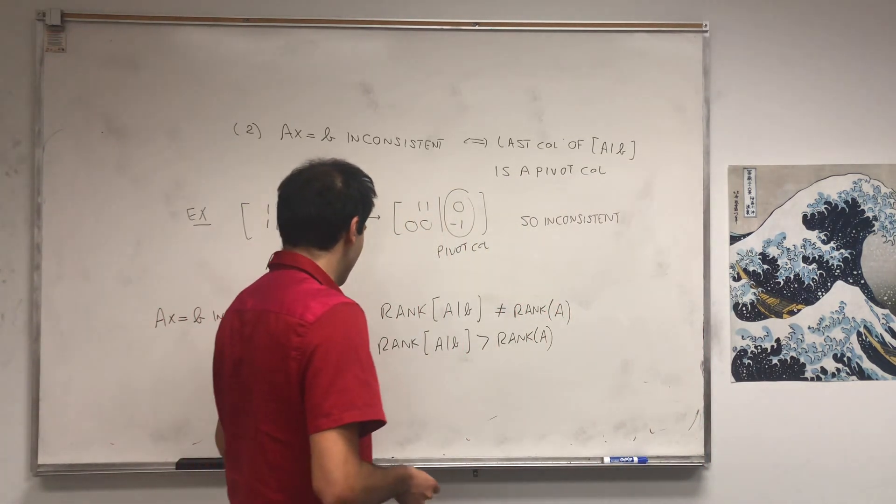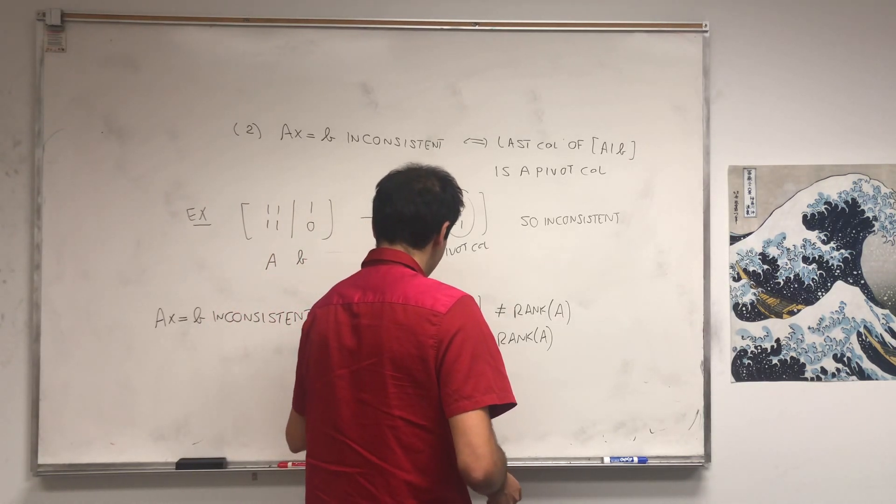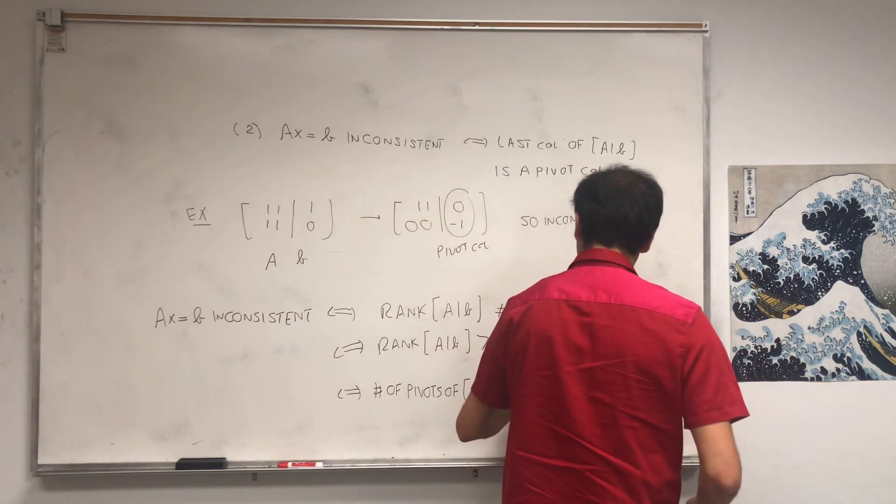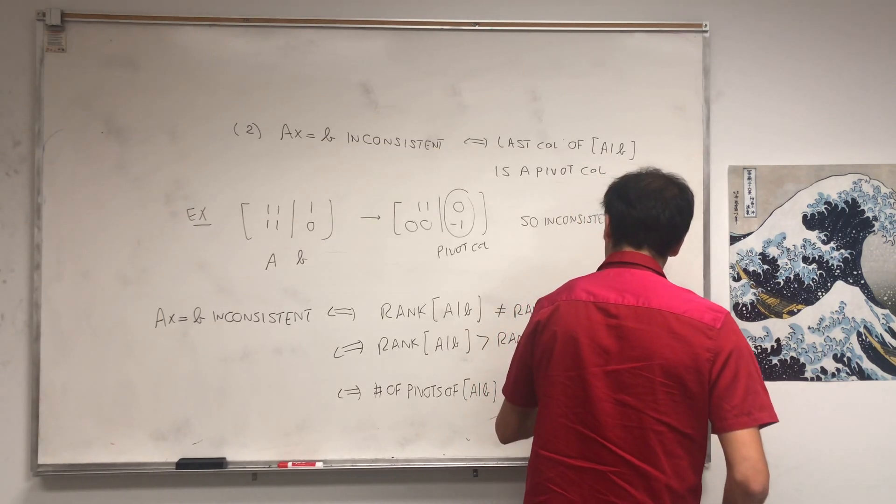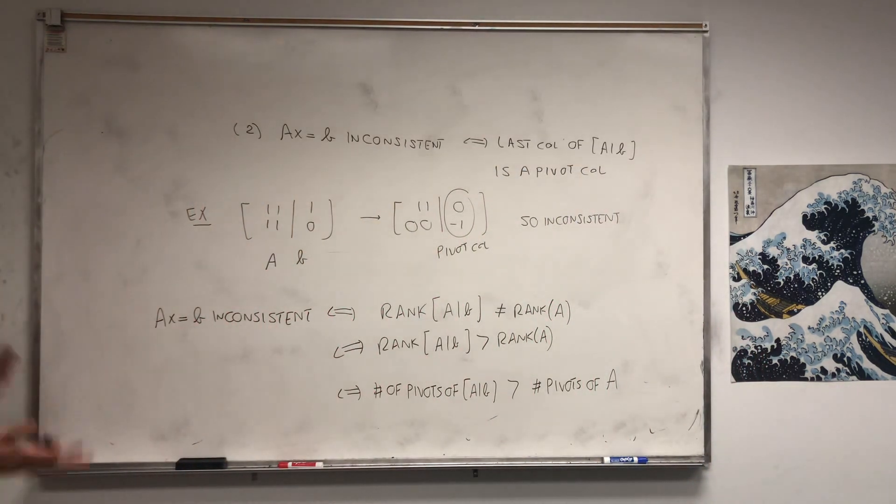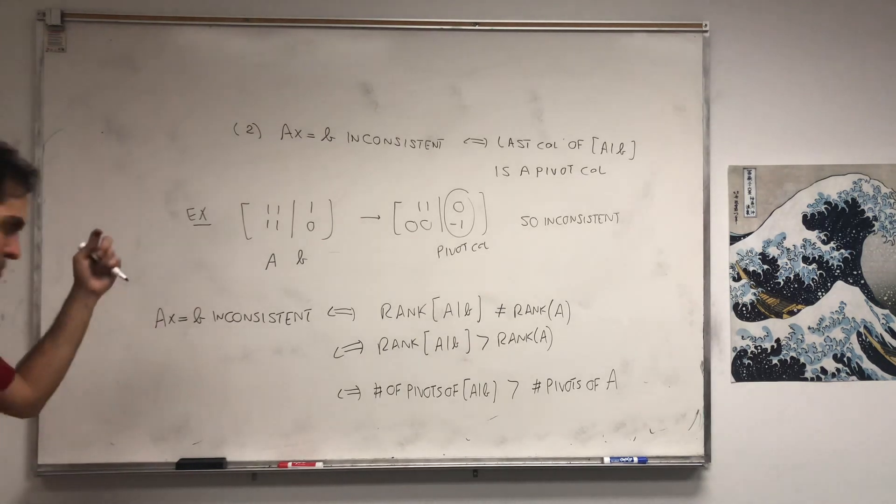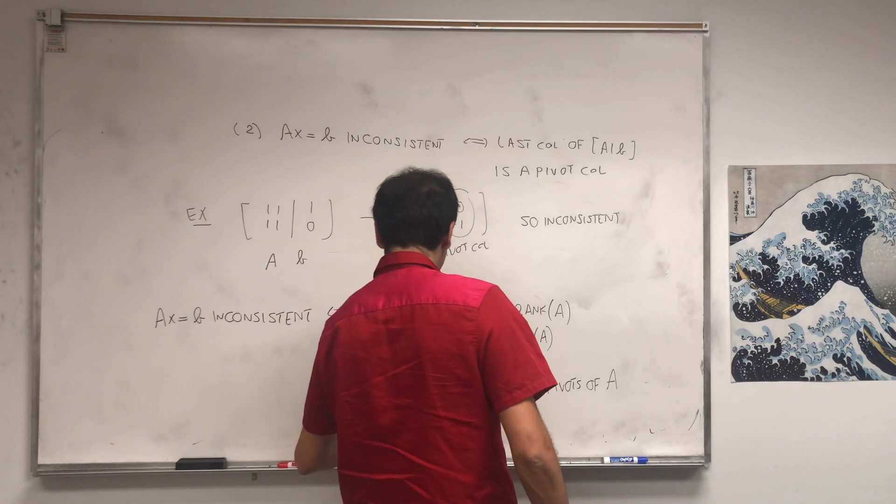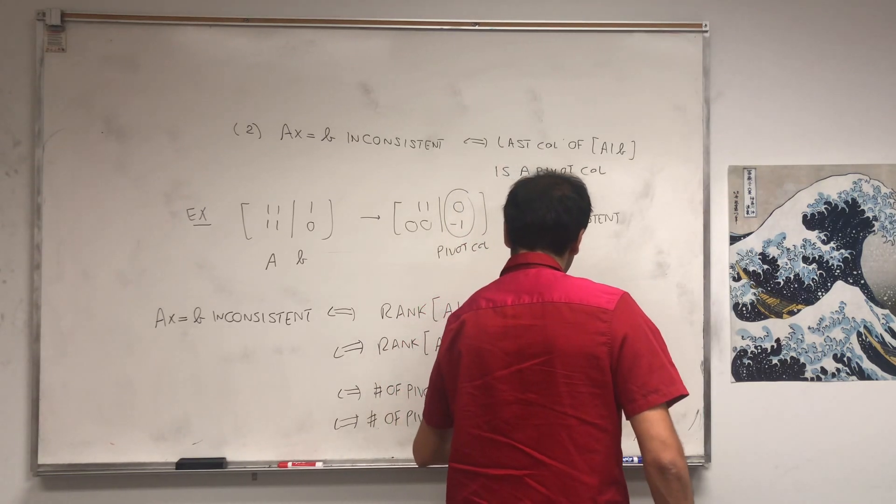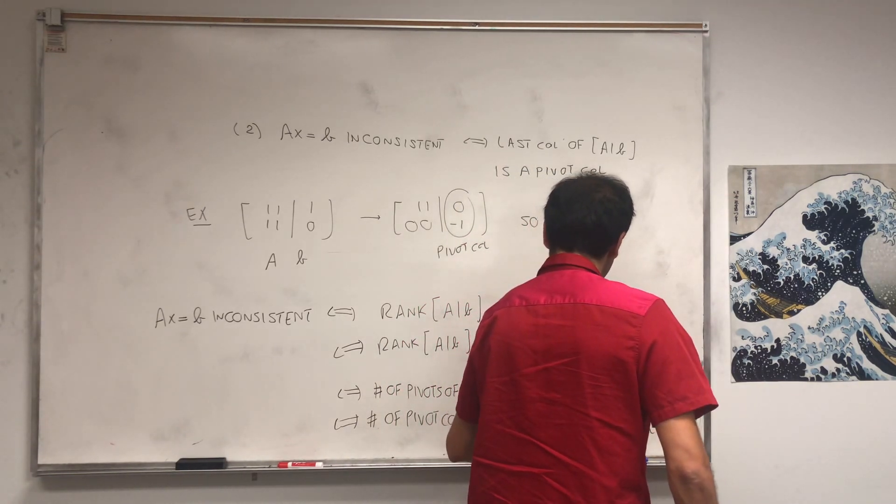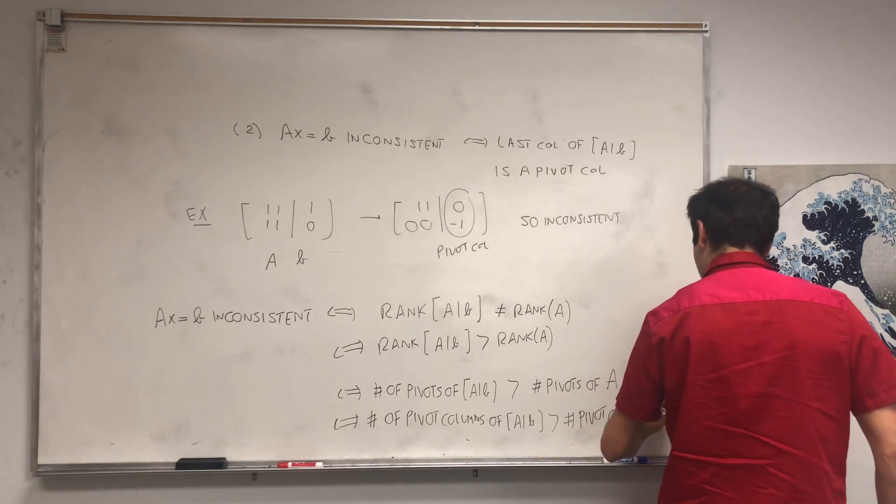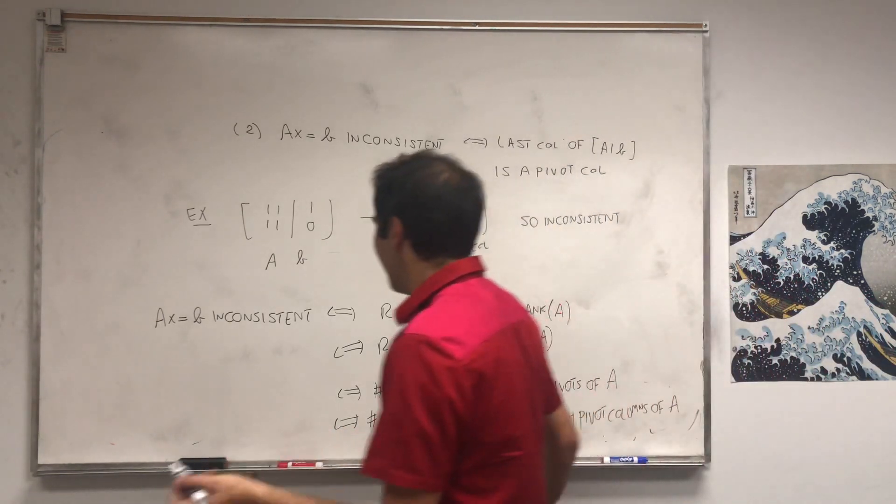And the rank, in this case, to think of it as a number of pivots, pivots of [A|B] is strictly bigger than the number of pivots of A. And in particular, because there's a pivot in each pivot column, this is equivalent to the number of pivot columns of [A|B] is greater than the number of pivot columns of A.